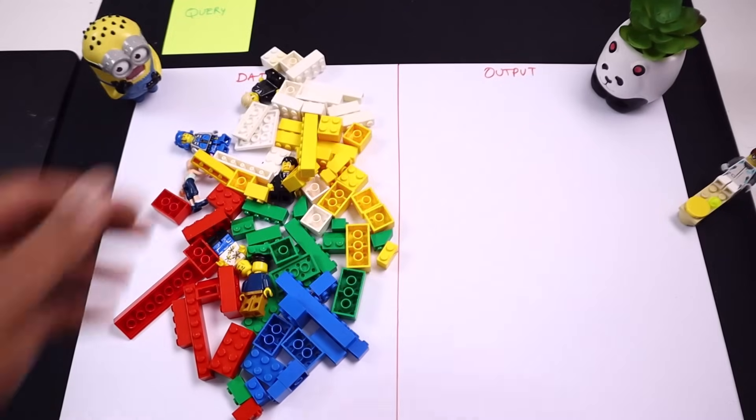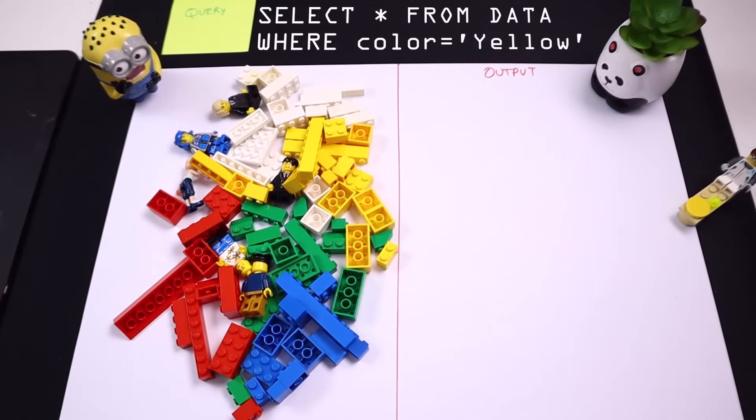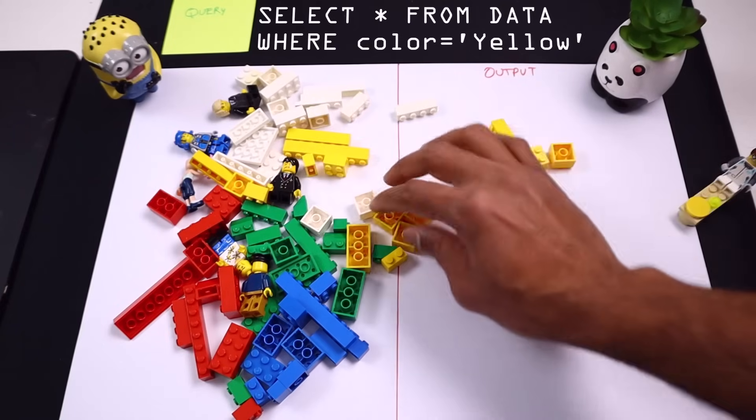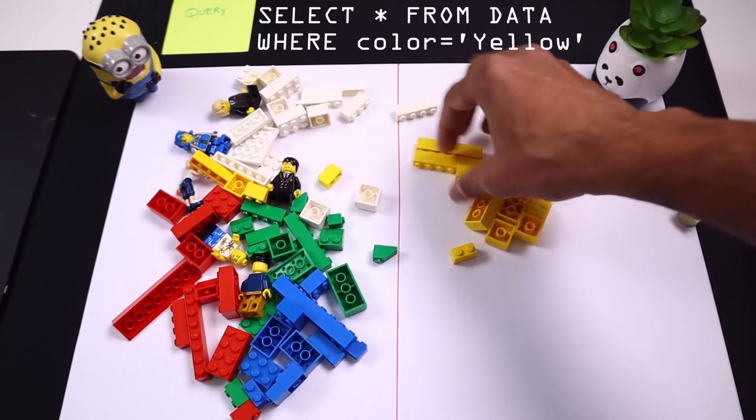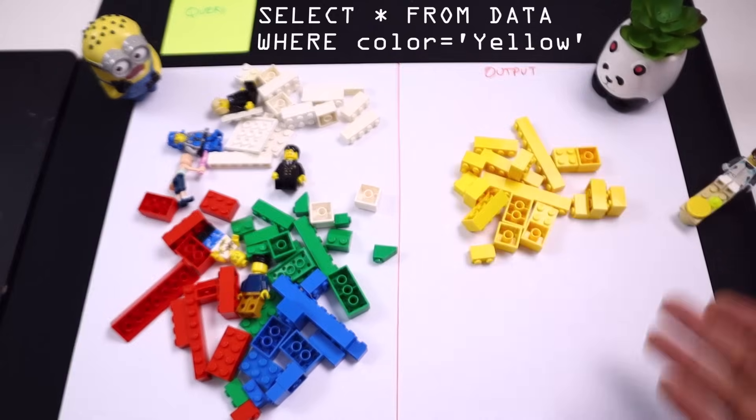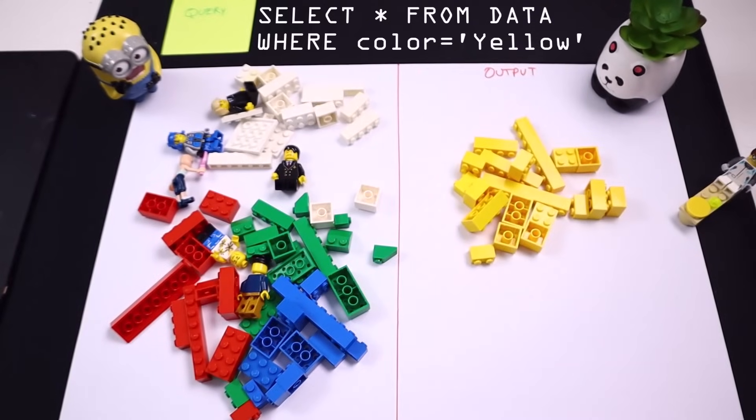Now let's say we're not interested in all the data, but we just want to look at just the yellow colored bricks. So we could say select star from data where color is equal to yellow. So in that case we would pick up all the yellow bricks and then put them there.